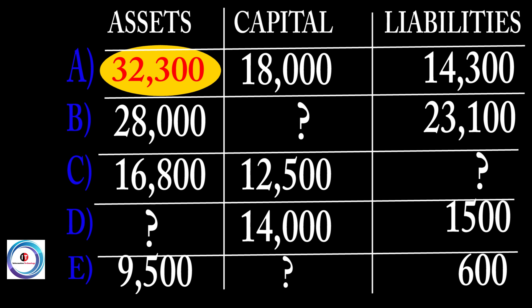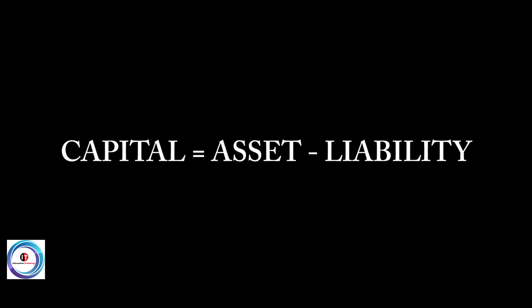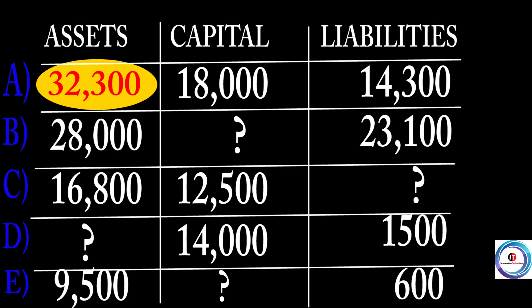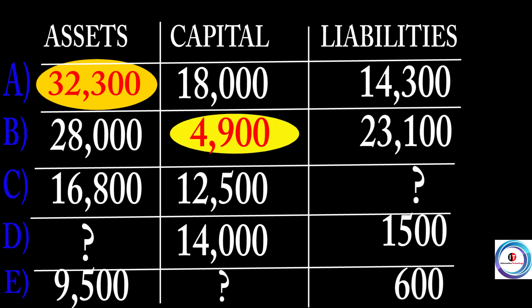Part B — what are we told? We are told to look for capital. So I will say: capital equals asset minus liability, because when asset comes to this side of the equation, capital equals asset minus liability. I don't have capital, but I have asset: 28,000. So when you subtract the two, you will get 4,900, if you do your calculation correctly.